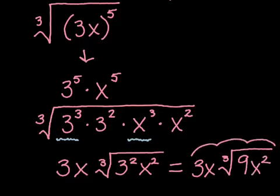giving me a final answer of 3x times the cube root of 9x squared. And that is my final answer. Taking the original rational exponent, rewriting it as a radical, here a cube root, and then simplifying that radical into simple radical form.